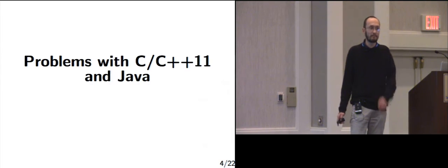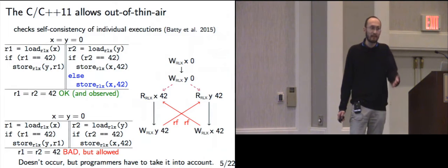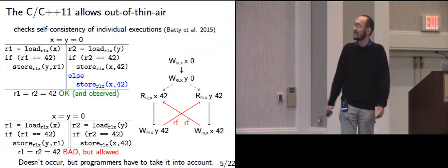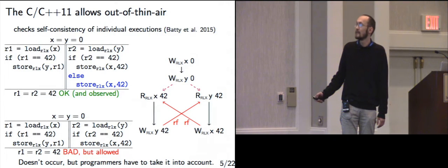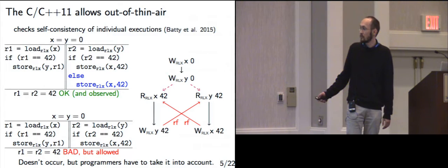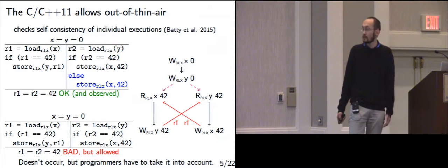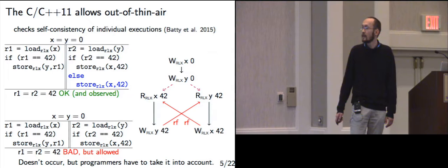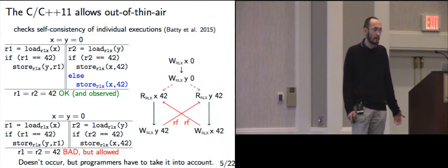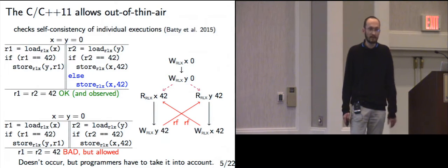Let's look at the two main memory models that try to tackle this issue. The C memory model works by looking at individual executions. If you look at the individual execution of the out-of-thin-air program where both threads read 42 — this reads 42, so it writes 42; this reads 42, so it writes 42 — this loop execution has to be allowed because we want to allow the corresponding behavior. But it's also an execution of the problematic program. So C11 overshoots and allows out-of-thin-air outcomes. This is a specification problem: no C11 compiler makes this outcome possible, but if you're a programmer programming against the C11 memory model, you have to take it into account, with disastrous consequences.